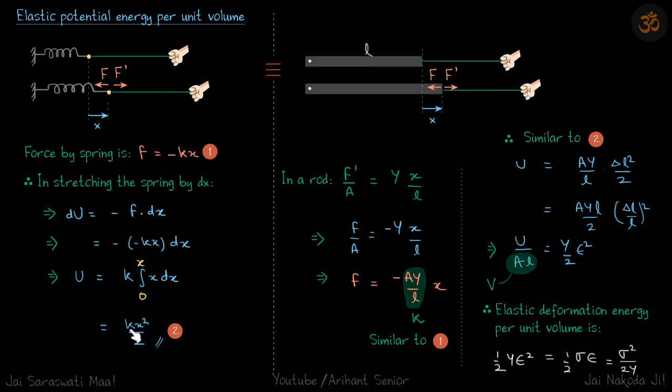Just like our result here, we can directly now say that U is equal to half k x squared. So half k, and x in our case is delta L. So U is equal to AY by L into delta L squared by two.